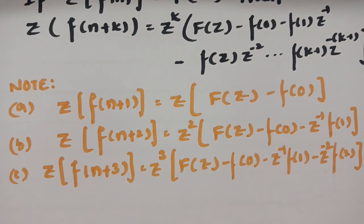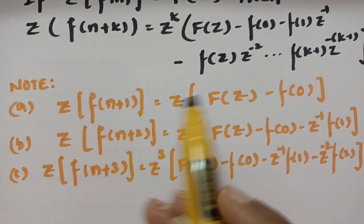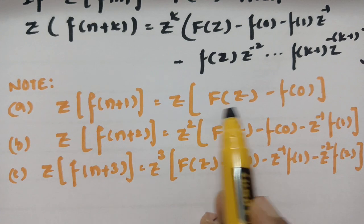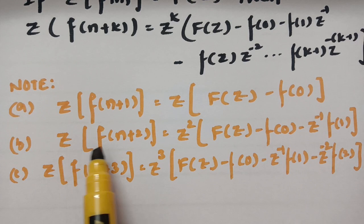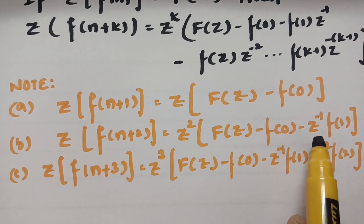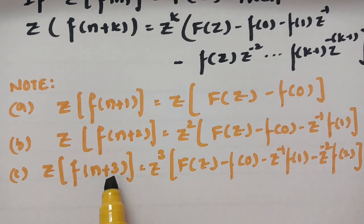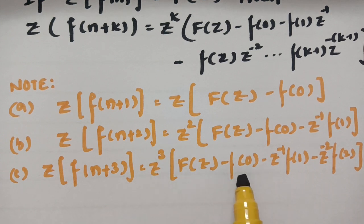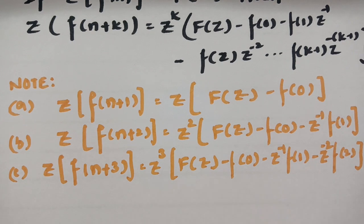If shifted by one unit, Z of f(n plus 1) equals z^1 · F(z) minus f(0). If shifted by two units, Z of f(n plus 2) equals z^2 · F(z) minus f(0) minus z^(-1)·f(1). If shifted by three units, Z of f(n plus 3) equals z^3 · F(z) minus f(0) minus z^(-1)·f(1) minus z^(-2)·f(2). It is very easy to remember.